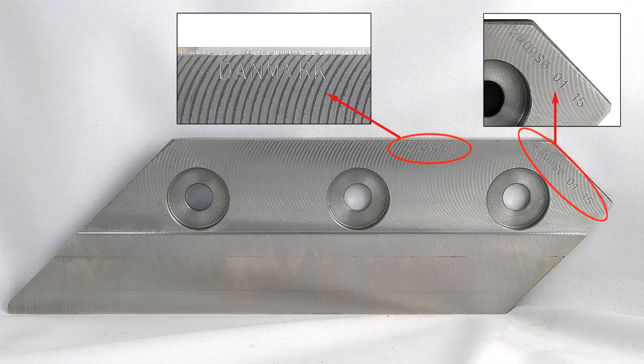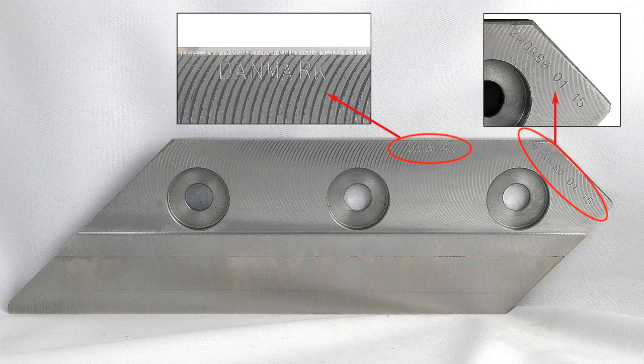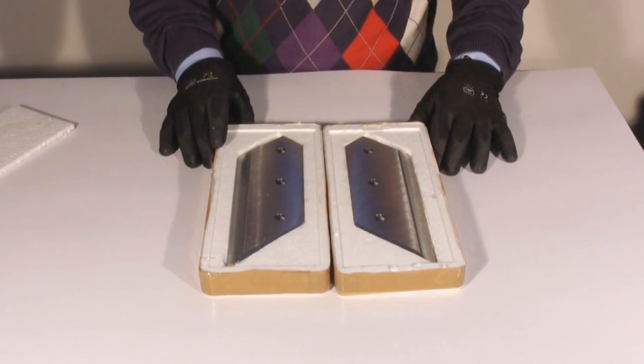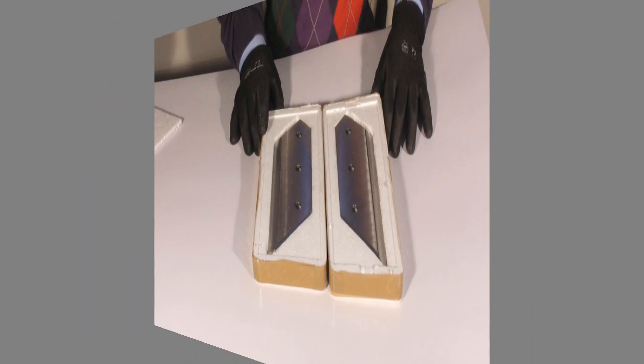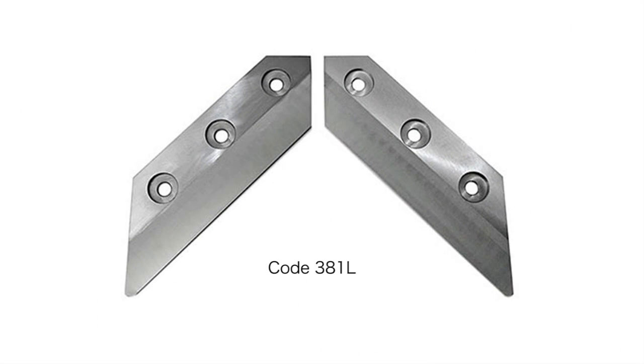The original Morso blades are identified with their logo marked on the metal. They are provided with a polystyrene container. Rinaldin also provides the Pilum blades which are compatible with the Morso blades.